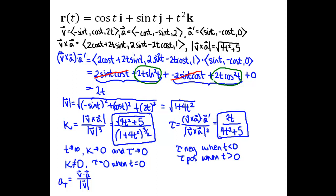So one of the formulas I could use for the tangential component of acceleration is this one: V dot A divided by the magnitude of V. I don't have V dot A yet, but that's a pretty straightforward calculation.